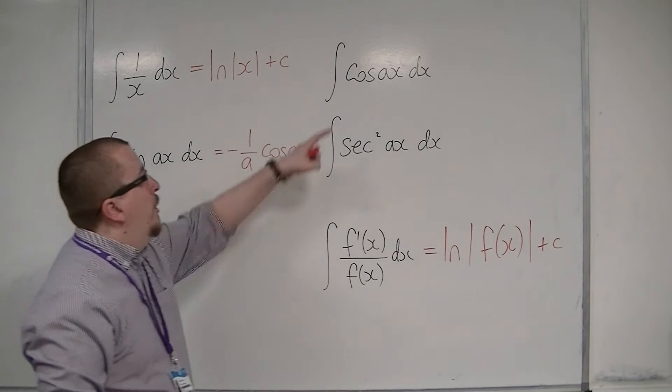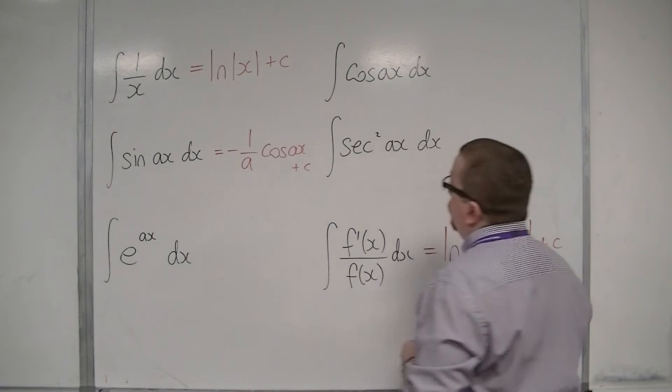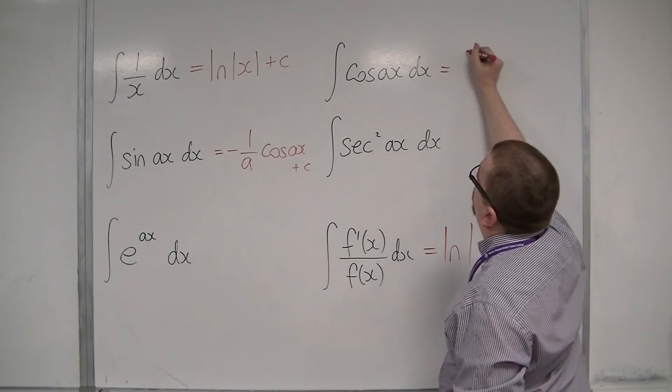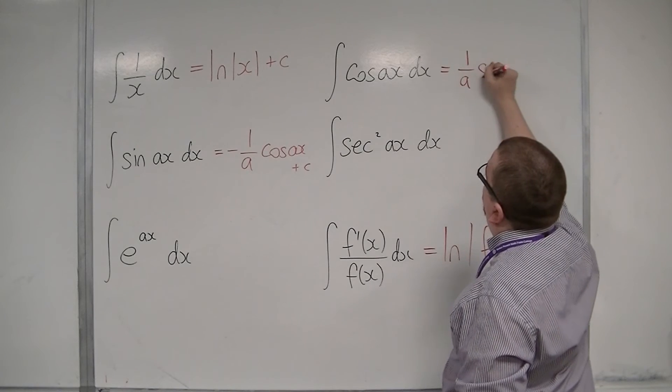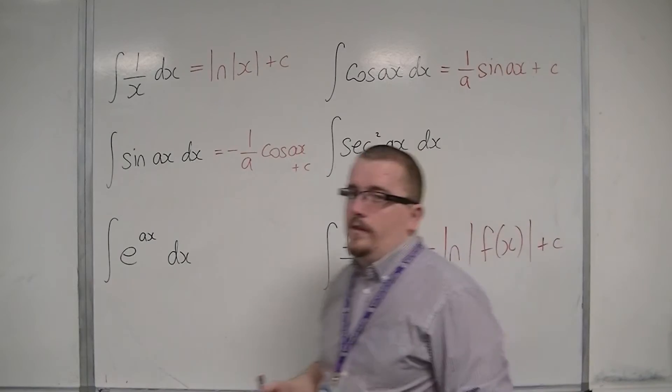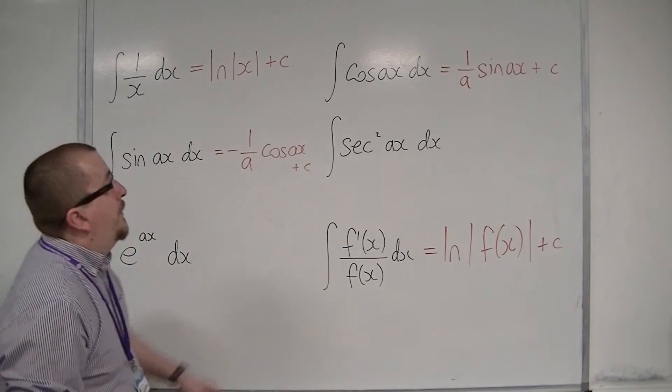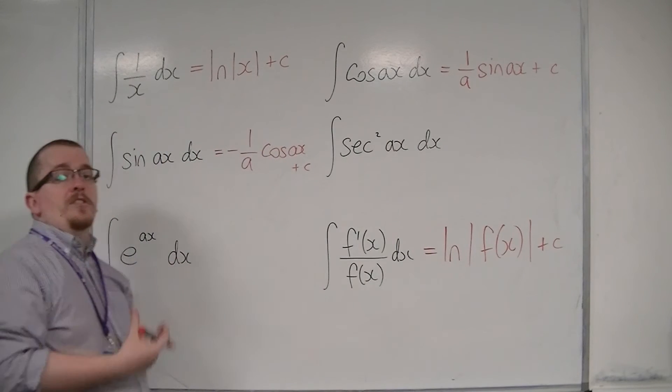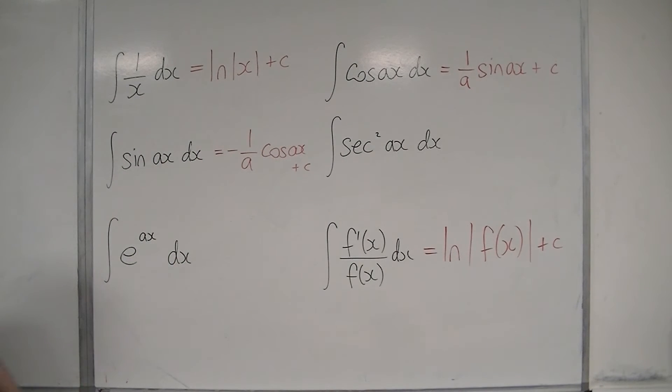In a similar way, cos(ax), cosine integrates to sine, so this must be 1/a sin(ax) + c. So in other words, cos(2x) will integrate to 1/2 sin(2x).